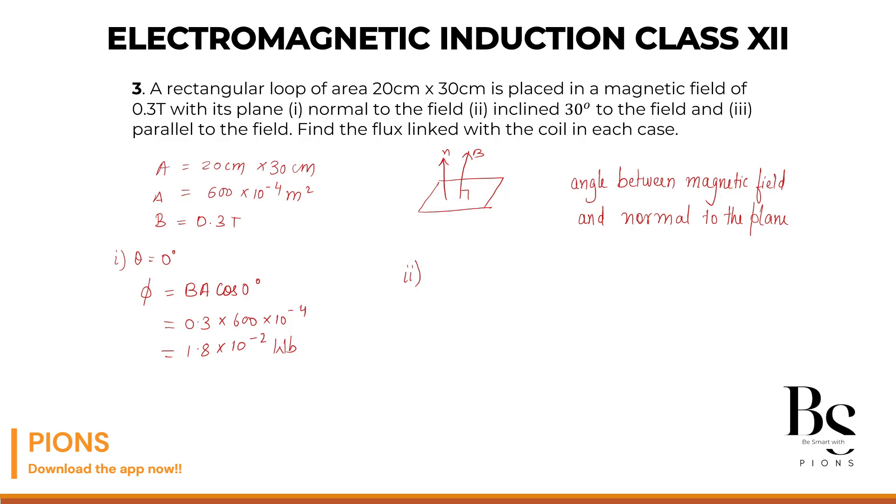Second case. It is inclined. What is inclined? Magnetic field is inclined at 30 degree. So magnetic field is. Let me draw it here. Roughly. This diagram. So this is our plane. And magnetic field is making angle 30 degree.